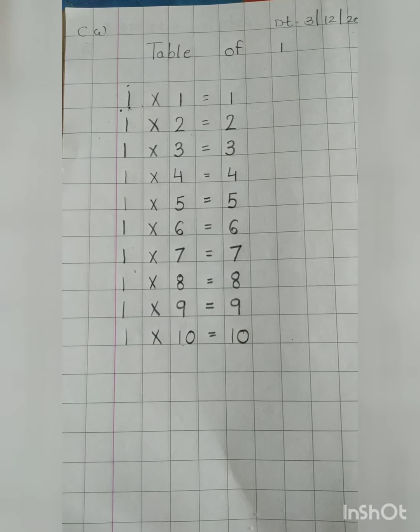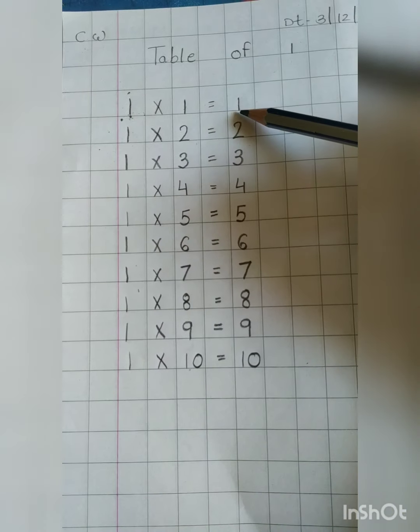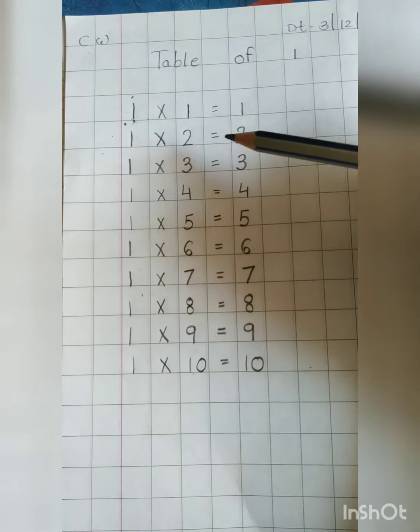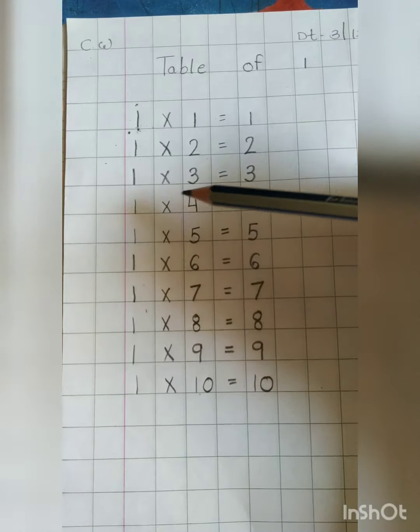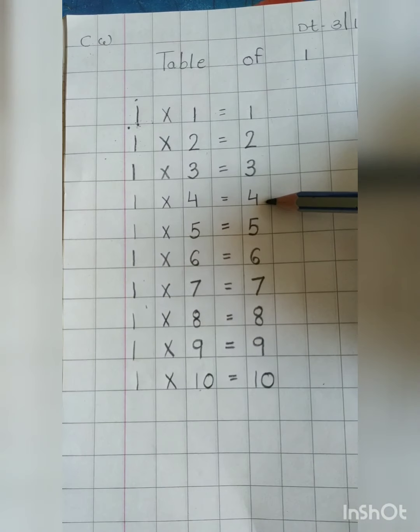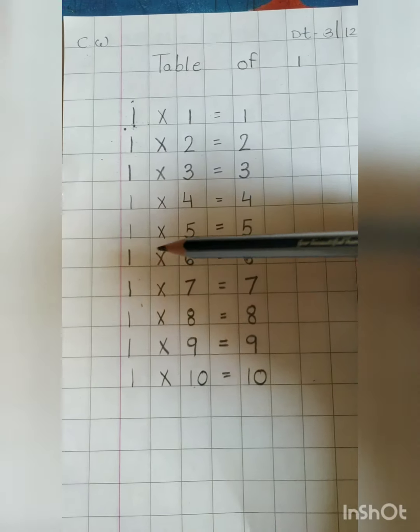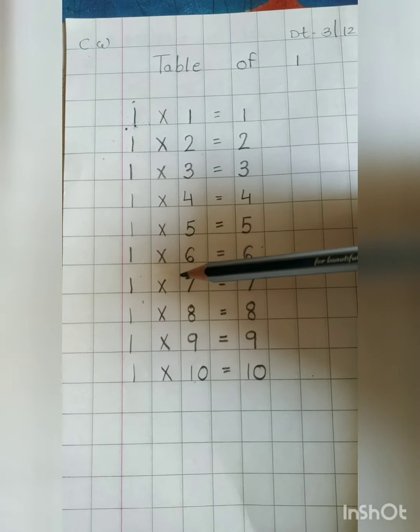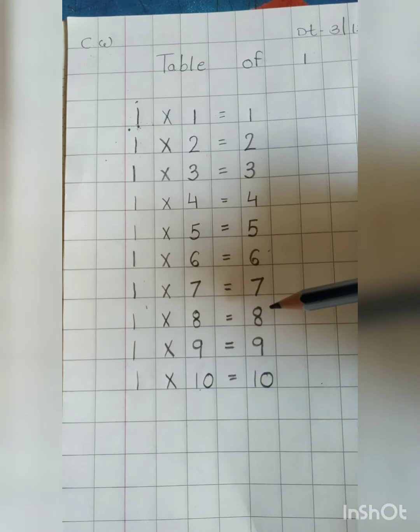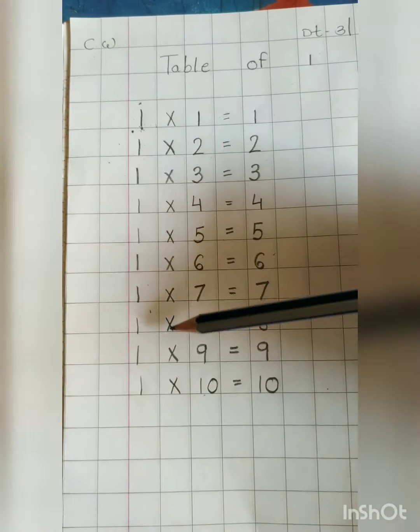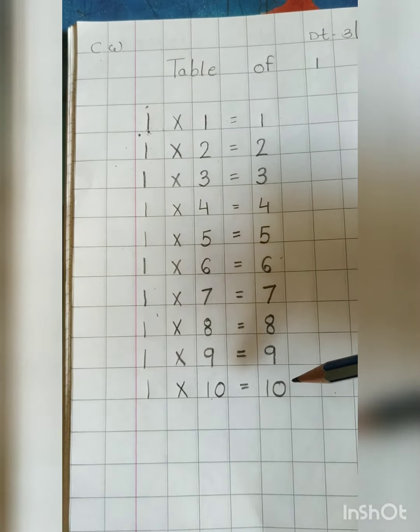Let's repeat one time. The teacher recites the complete table again: 1 times 1 is 1, through 1 times 10 is 10.